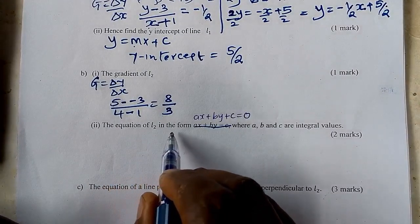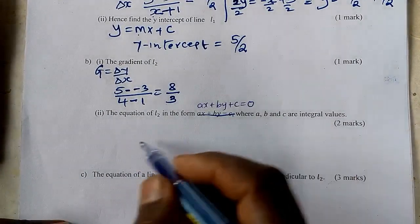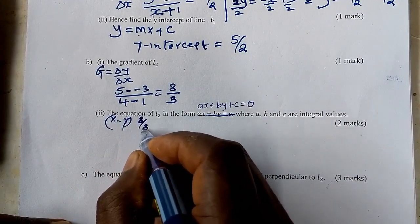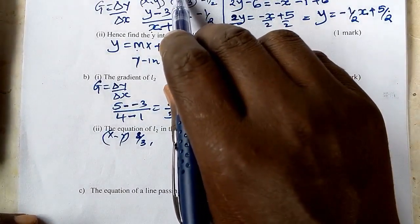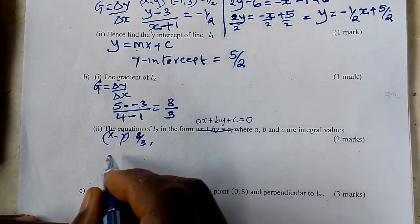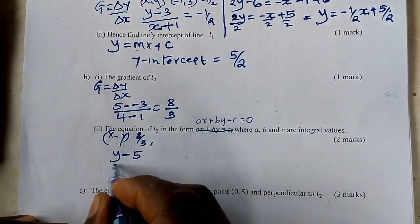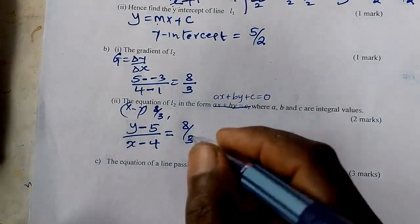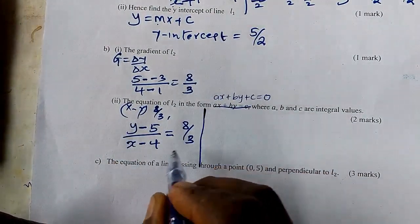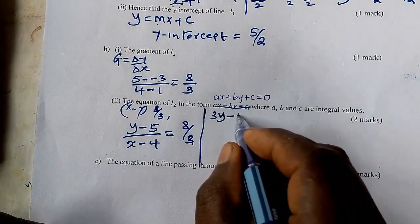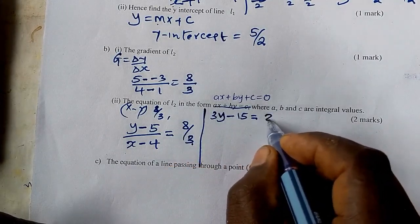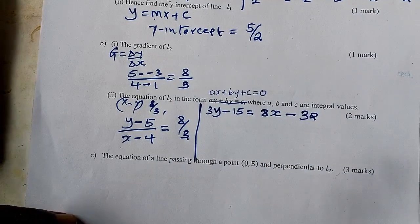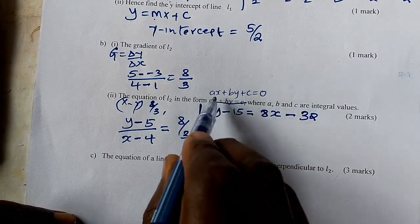Now find the equation of L2. We take the general point (x, y), the gradient is 8 over 3, and we take one of the points — let us use (4, 5). So we write: y minus 5 divided by x minus 4 equals 8 over 3. We cross-multiply to get: 3y minus 15 equals 8x minus 32.